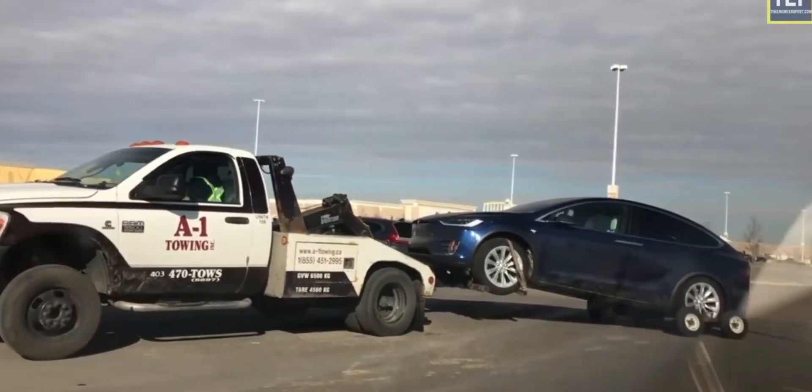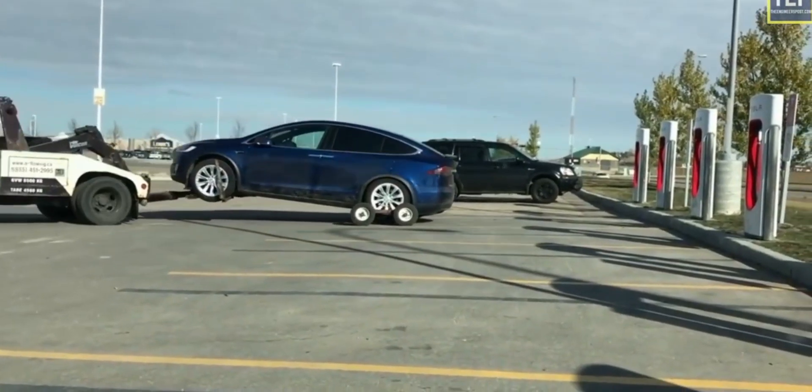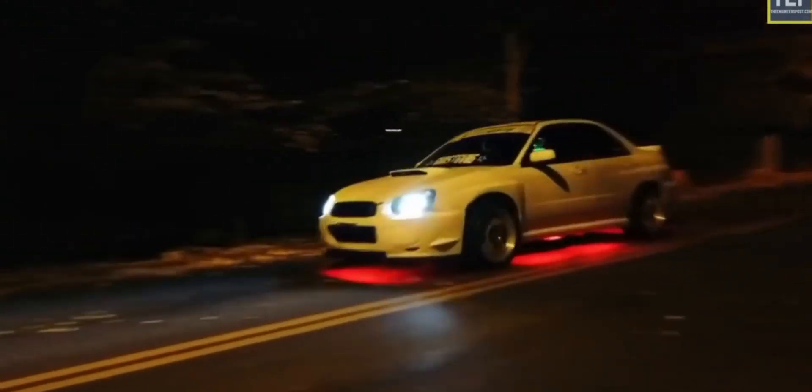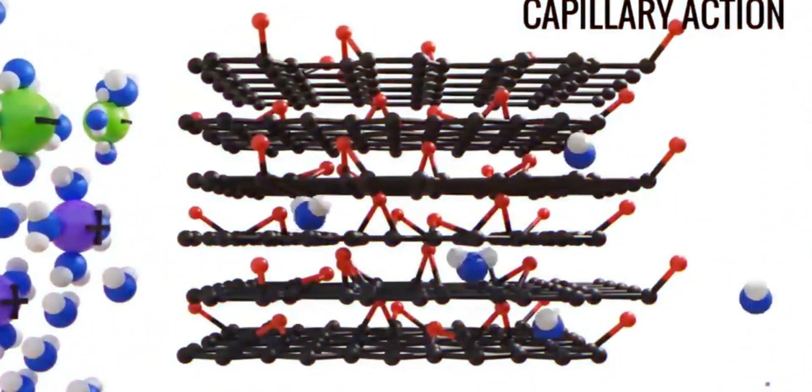Comparatively, the Nissan Leaf's 600 pounds battery pack can travel only about 100 miles. Even a Tesla Model S has a maximum range of around 390 miles at 100 percent efficiency, the highest range currently available.